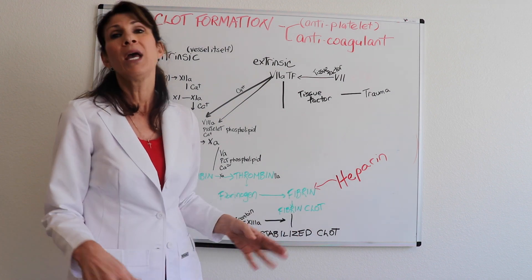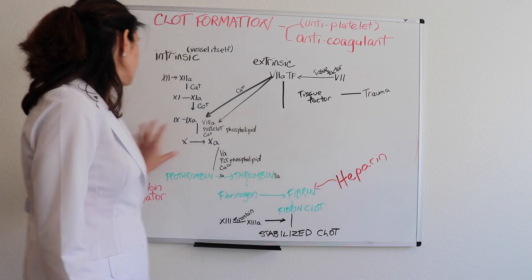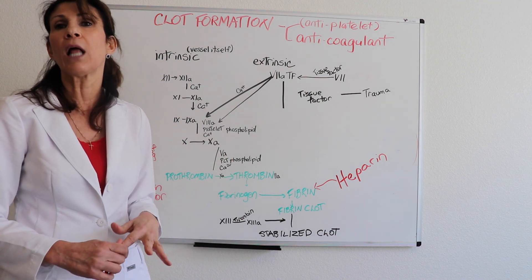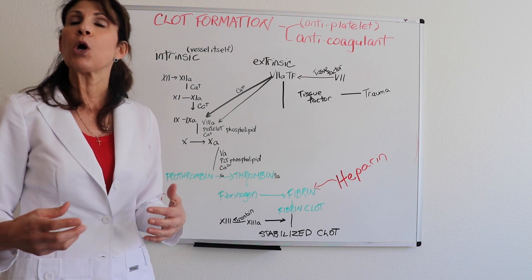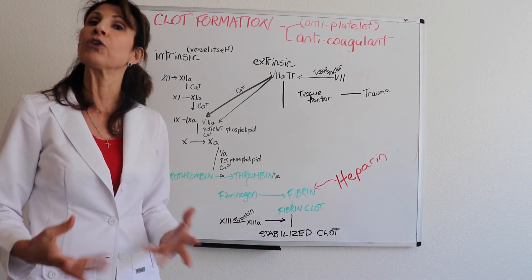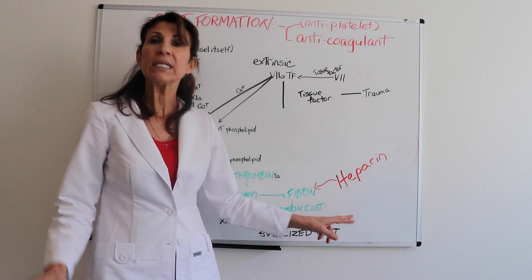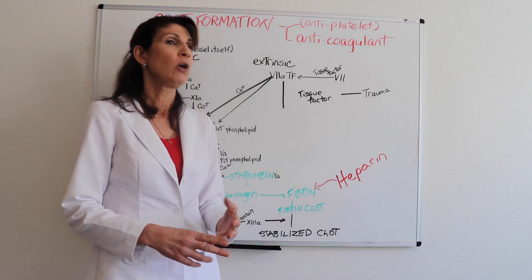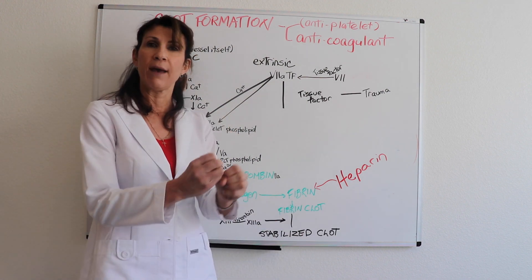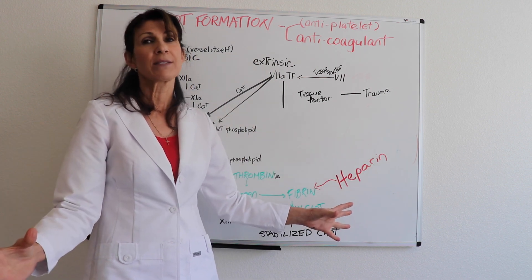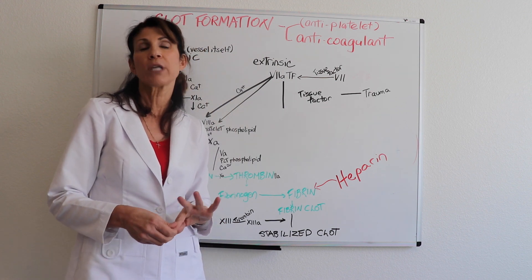If none of it worked and a fibrin clot has already formed, that's what the clot-busting medications are for. Heparin and Coumadin don't dissolve an existing clot — they facilitate the body's own ability to absorb it over time. If you don't have that time, you go to the clot-busting medications: urokinase and streptokinase, which actually break up the clot and open the vessel. These are, of course, very high-risk medications.